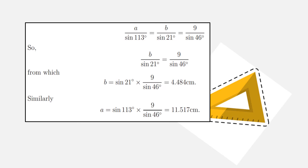So b = sin 21° × 9/sin 46° = 4.484 cm. Similarly, a = sin 113° × 9/sin 46° = 11.517 cm.